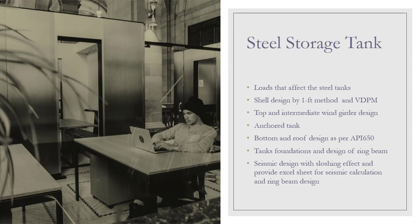The sloshing effect requires specific calculations as outlined in API 650. We will illustrate it and also provide an Excel sheet to perform the seismic equation calculations and assist you with the ring beam design. During the course on Udemy, you can contact me by email to receive this Excel sheet to facilitate the seismic design calculations.